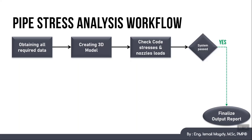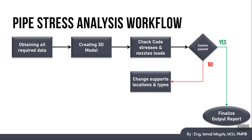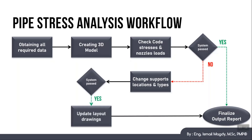But if the system doesn't pass from the first time, which happens most of the time, we start first by changing the type of the support and their location. It is very important to start first by changes in the supports only because this has the least impact on the piping system arrangement and on the hydraulic engineer. During our pipe stress analysis on AutoPipe software we will learn how to understand the system's behavior to decide which supports need to be changed or modified. If the system passes, we update our layout drawings first to capture whatever changes we did, followed by finalizing the output report.